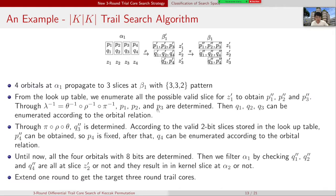Through the inverse of linear operation, P1, P2, P3 are determined. And then, according to the orbital relation, we can get Q1, Q2, Q3′. Through the linear operation, Q3′ is determined. According to the valid 2-bit slice stored in the lookup table, P4′ can also be obtained. So P4 is also fixed.